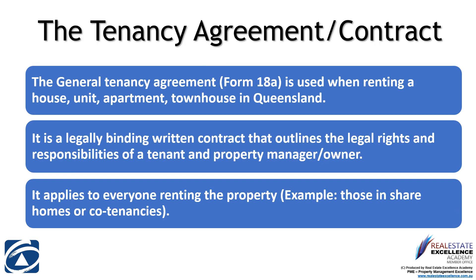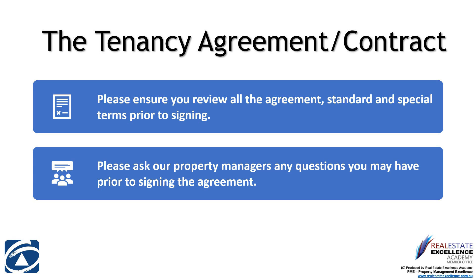The Form 18A is a legally binding contract between yourself and the property owner. Our agency manages the property on behalf of the lessor. The General Tenancy Agreement is used when renting a house, unit, apartment, or townhouse in Queensland. It outlines the legal rights and responsibilities of the tenant, the property owner, and our agency on behalf of the owner. The Form 18A is made up of standard terms, which are the law and non-negotiable, and also special terms.